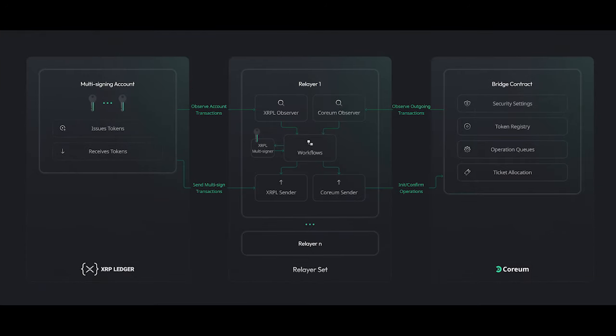The relayer sits in between the two chains — between the multi-signing account on the XRP Ledger and the bridge smart contract on the Coreum blockchain. Relayers are responsible for observing events on both chains and triggering actions on the XRP Ledger and Coreum. They are incentivized by receiving fees deducted from the transactions.